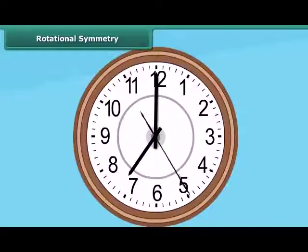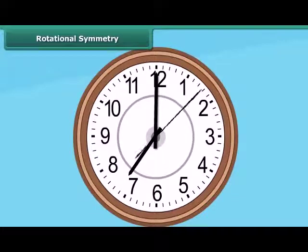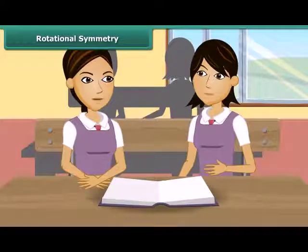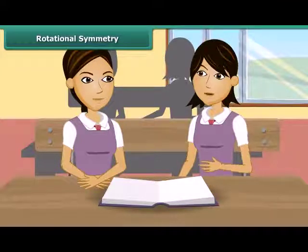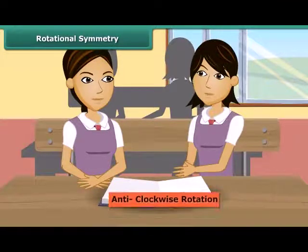Now look at this clock. It's going round and round, which means it is rotating. The hands of the clock rotate in a clockwise rotation. And when something rotates other than clockwise, we call that rotation anticlockwise rotation.